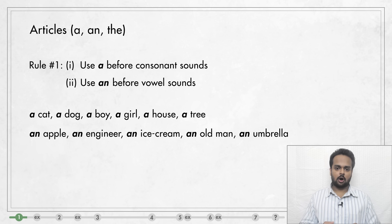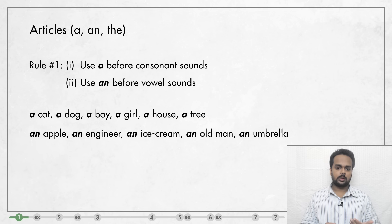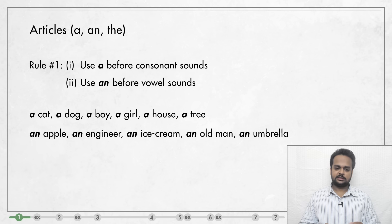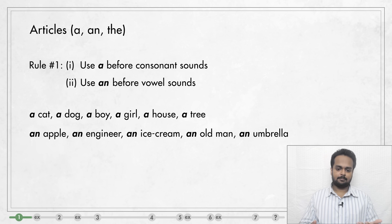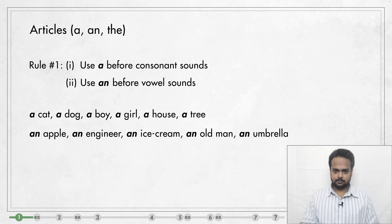In this next set of words, you see that they all start with a vowel sound. Apple starts with A, engineer starts with E, ice cream starts with I, old with O and umbrella with U. So we say an apple, an engineer, an ice cream cone, an old woman, an umbrella and so on. In speech, we don't say AN, we say 'an'.